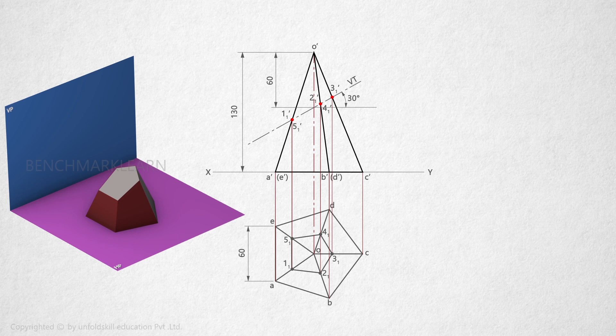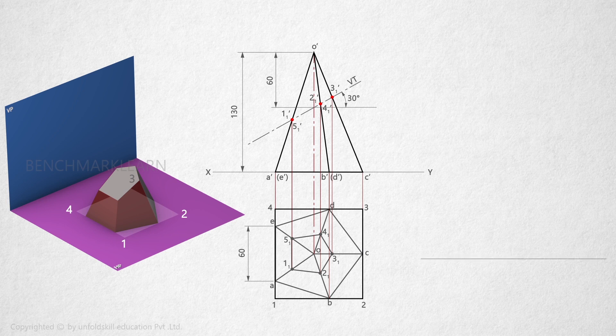To draw the isometric view of the section of the pyramid, we use the offset method. In the offset method, we take the rectangular plane enclosing the bottom of the solid. Draw the rectangle enclosing the top view and name the corners of the rectangle.